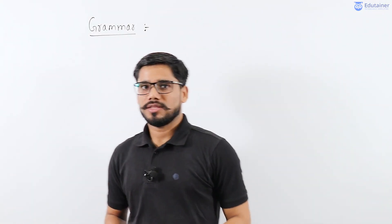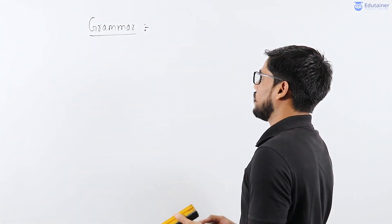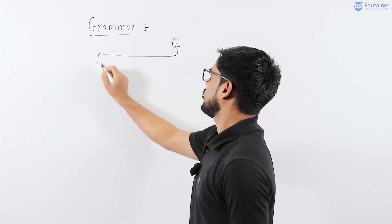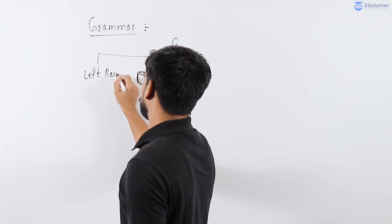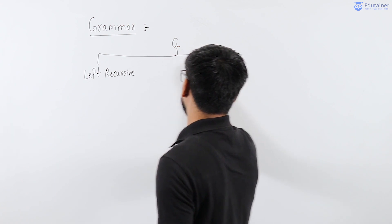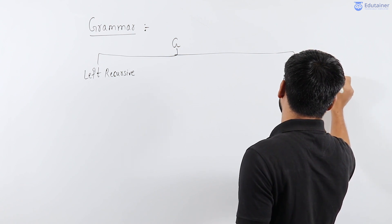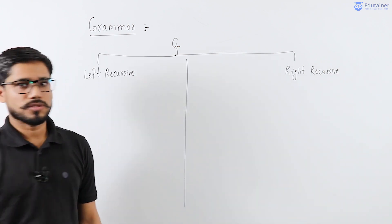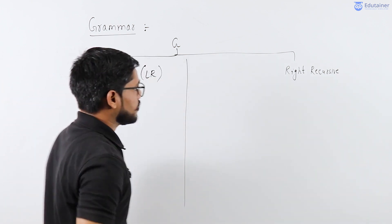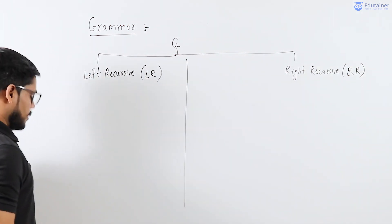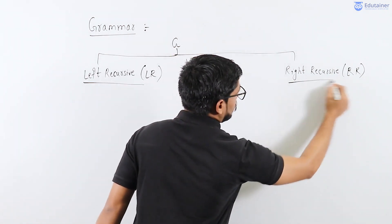Hello everyone. Now let us look at the third classification of grammar. We have already discussed the deterministic and non-deterministic grammar as well as the ambiguous and unambiguous grammar. The last classification is left recursive and right recursive grammar. Left recursive is also called LR grammar and right recursive is called RR grammar. Let us understand the concept of left recursive and right recursive grammar.